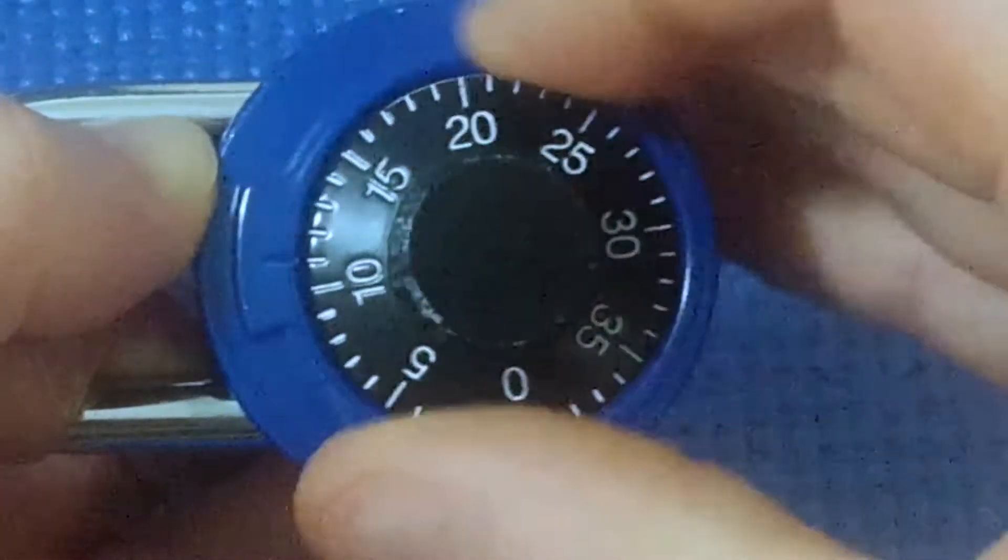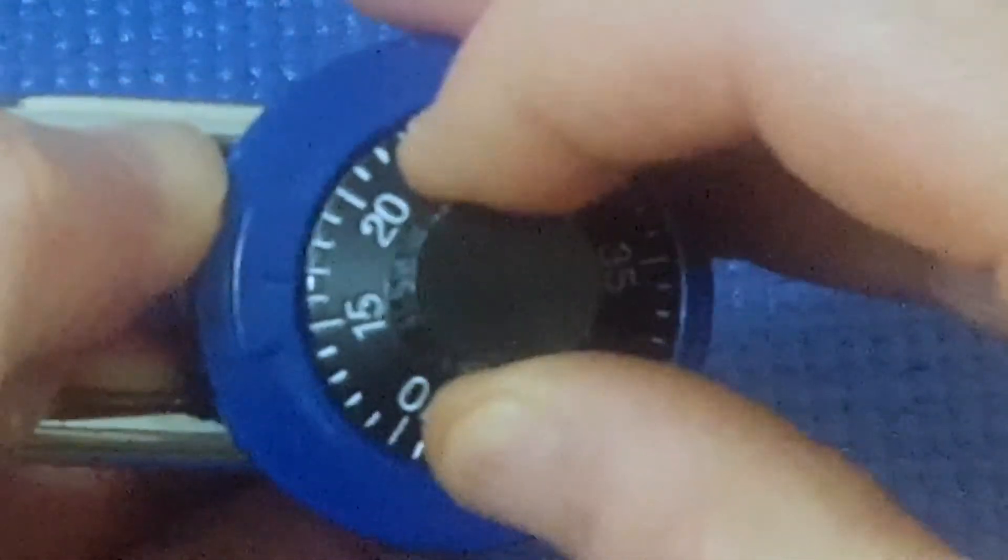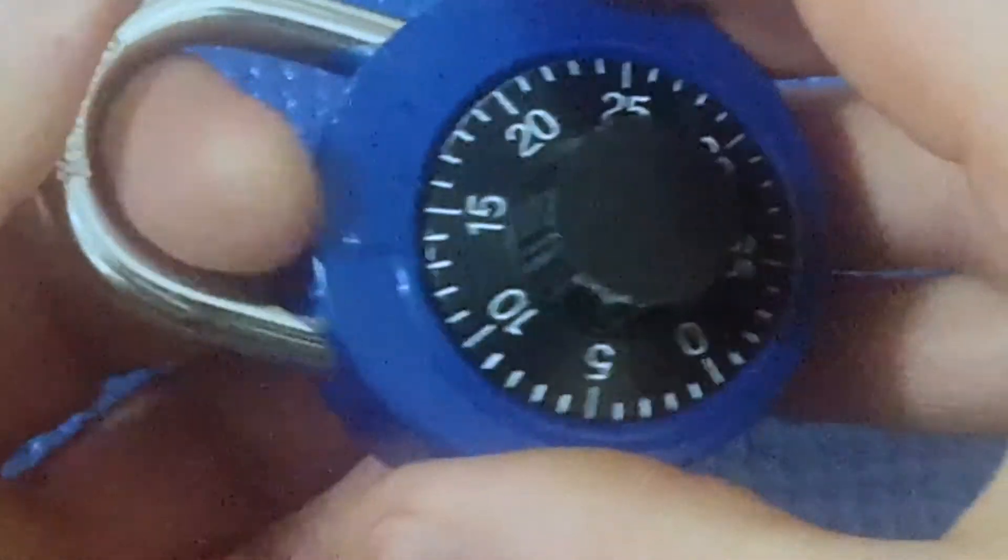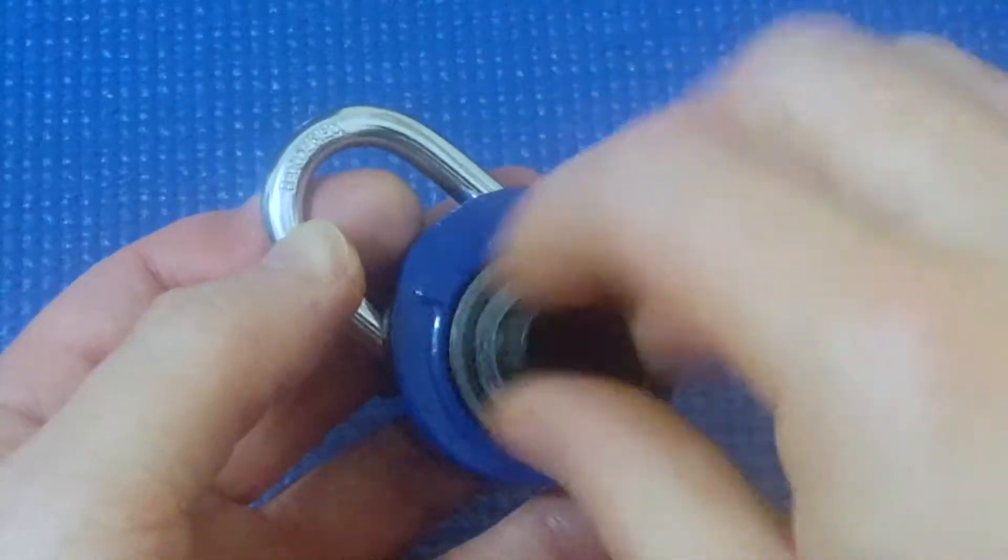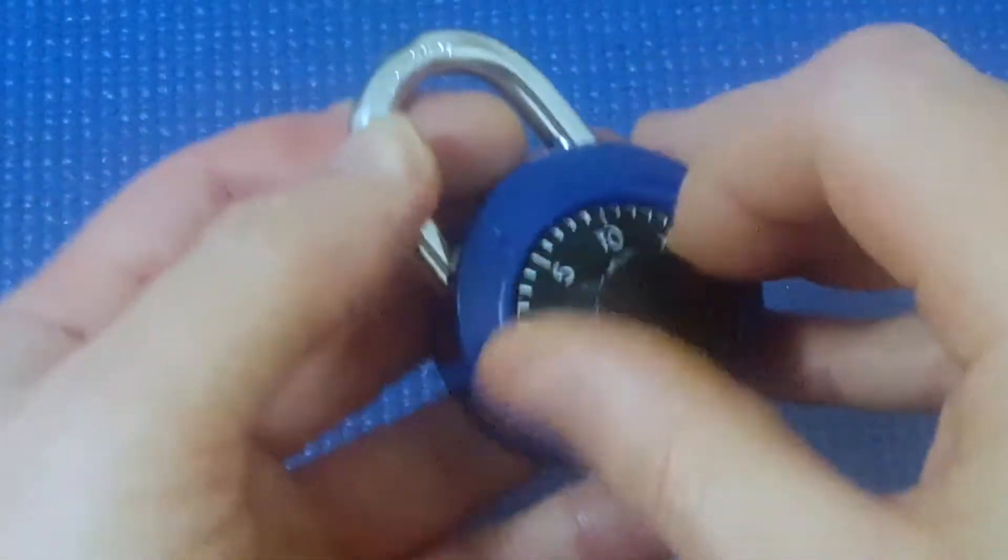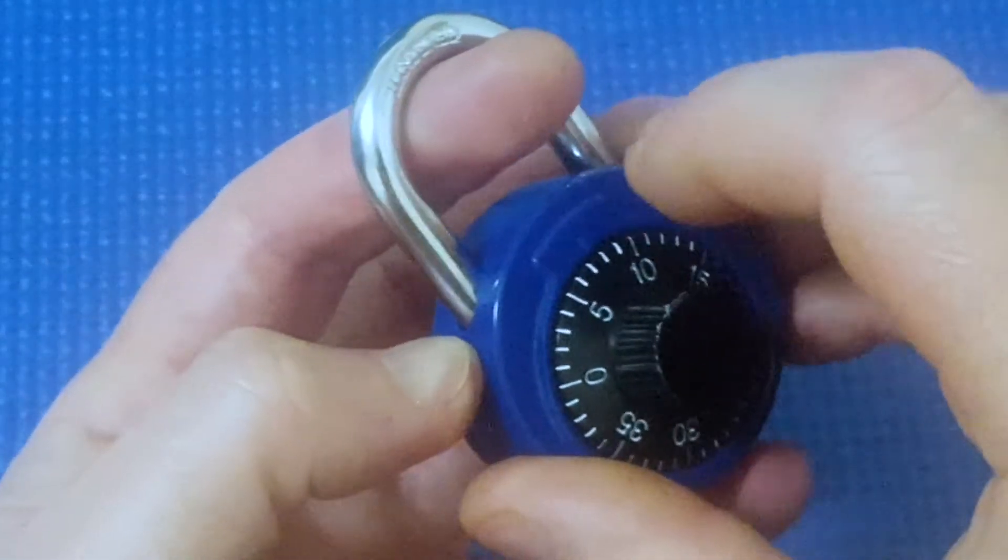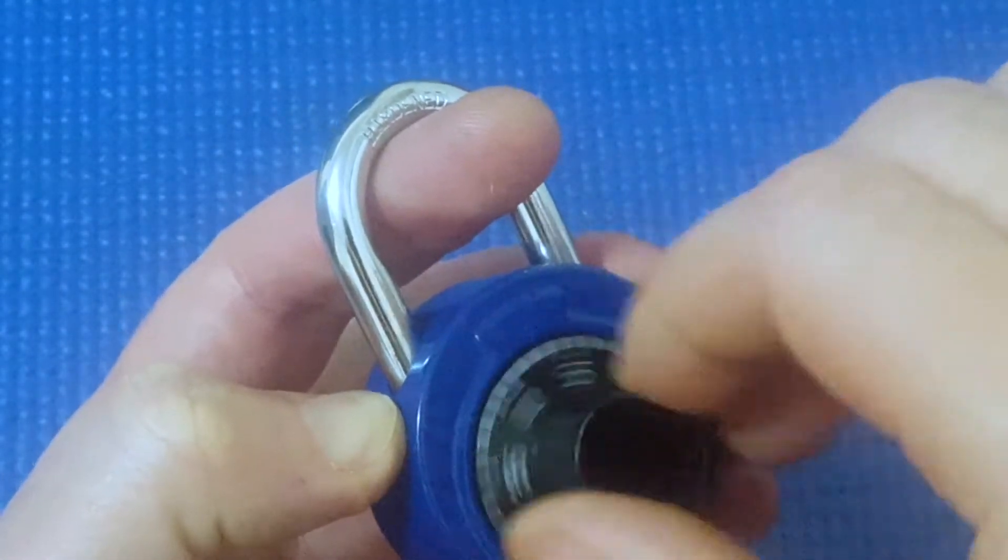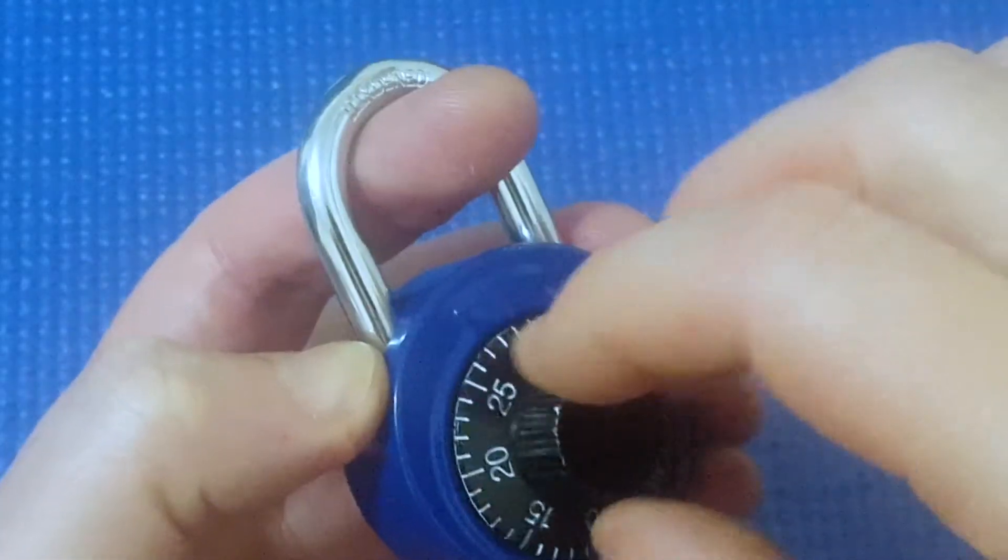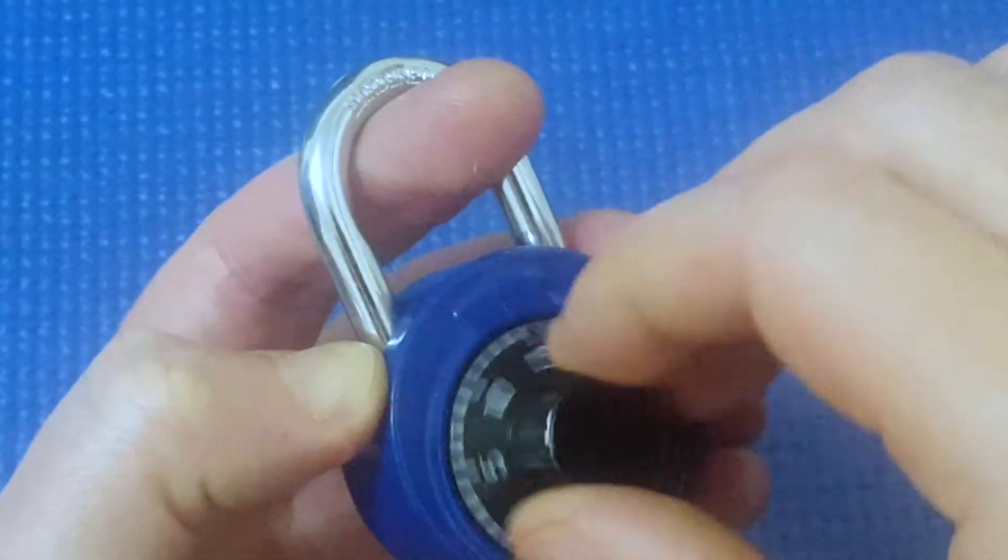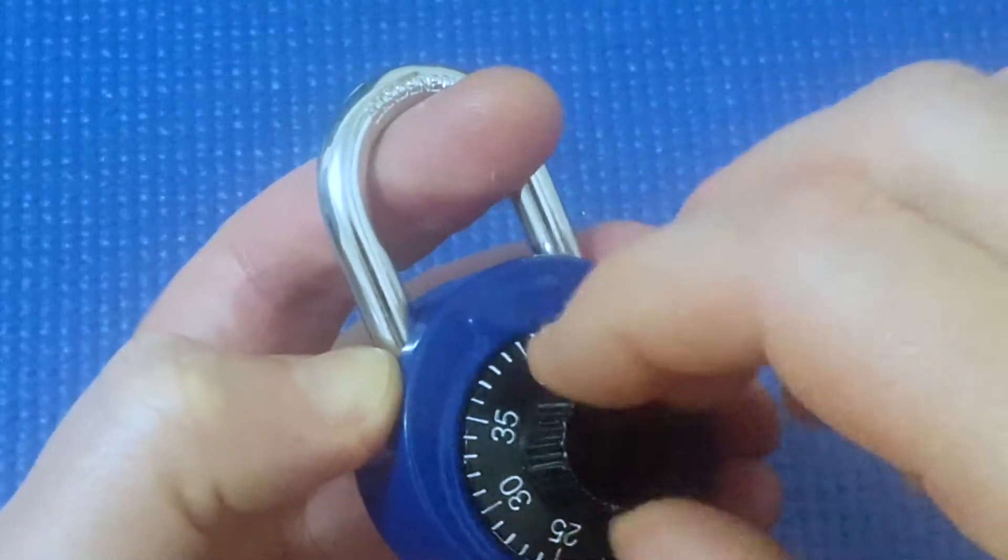So around about 16 is our last number. Can we find the first number? Remember with the Master Locks, when we turn it several times this way and we pull up on the shackle, we increase the tension until we can feel it stick, but only stick on one number. If it sticks on more than one number, it means I've applied too much tension.